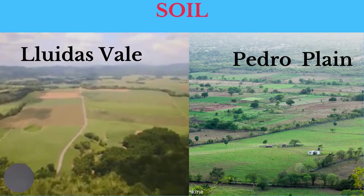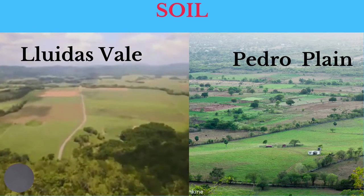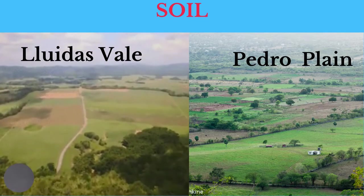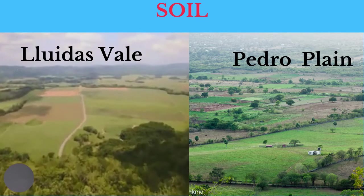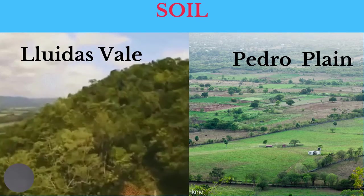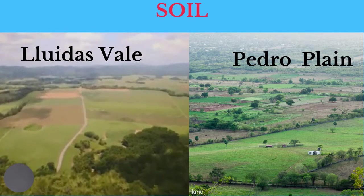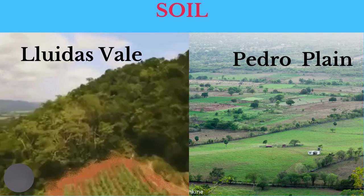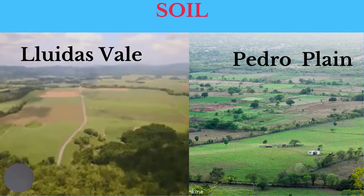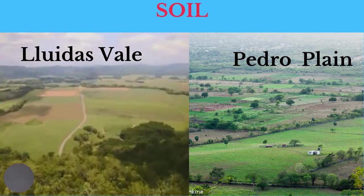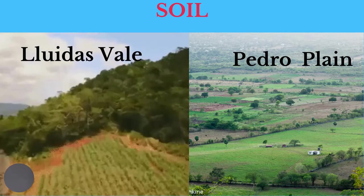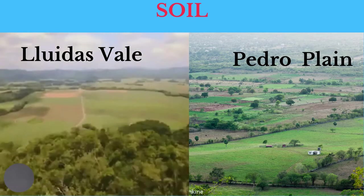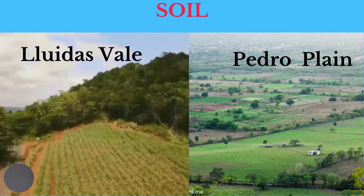Soil is another important physical factor. During the colonial period, where agriculture was the dominant economic activity, soil had a great influence on where people settled. The large sugar estates occupied the most fertile lands, and thus large settlements developed around these agricultural areas in a number of Caribbean countries, such as Jamaica and Guyana. Alluvial soils are found both on coastal plains, such as Pedro Plain in St. Elizabeth, and interior valleys, such as Liguanea Vale in St. Catherine.